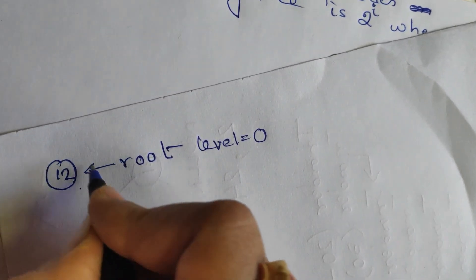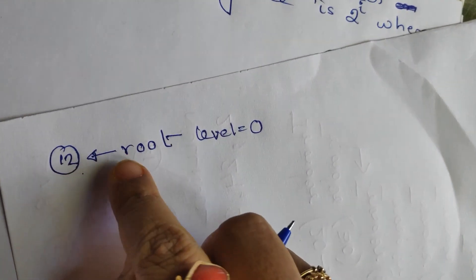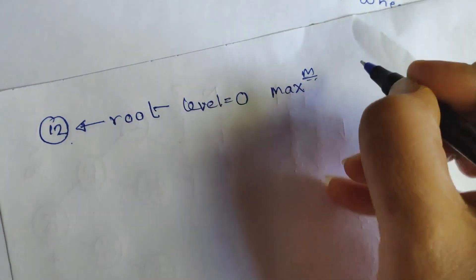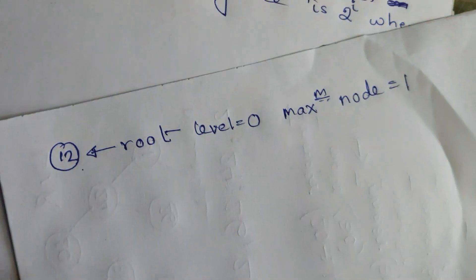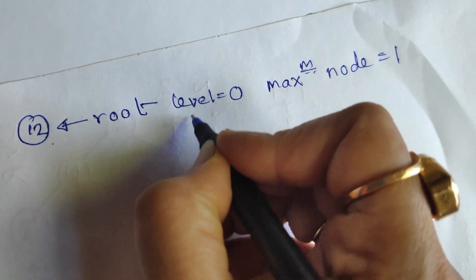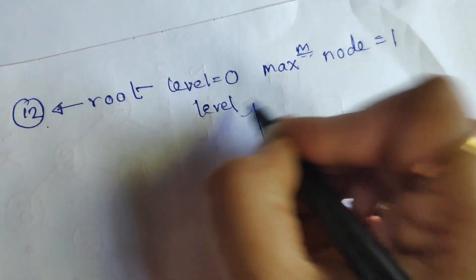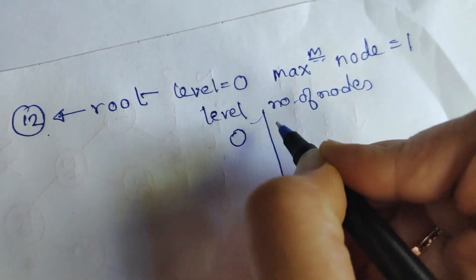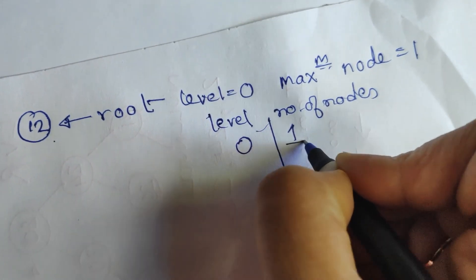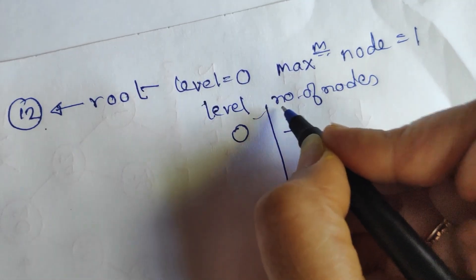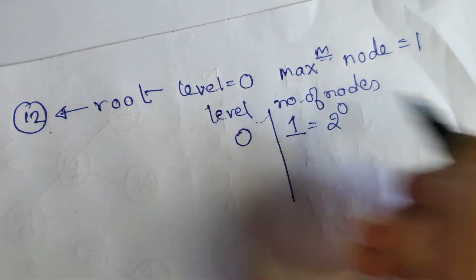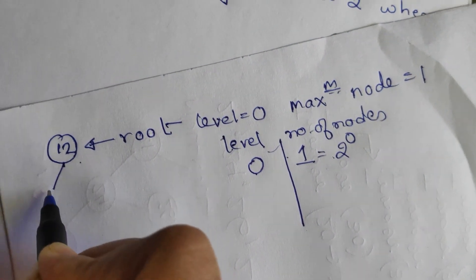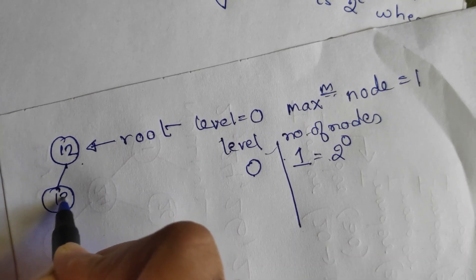How many nodes are possible at the root level of the tree? The maximum number of nodes possible at the root level is 1. Let me write a table — this is level and this is number of nodes. At level 0, the maximum number of nodes possible is 1, because it will be the root node of the tree. Now, 1 is nothing but 2 to the power 0.